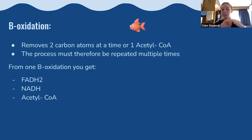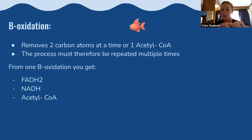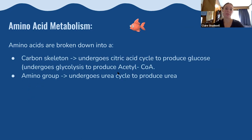Lipids or fatty acids undergo beta-oxidation. Each cycle of beta-oxidation removes two carbon atoms at a time — one acetyl-CoA — so the process must be repeated multiple times. From one cycle of beta-oxidation you get one FADH2, one NADH, and one acetyl-CoA.